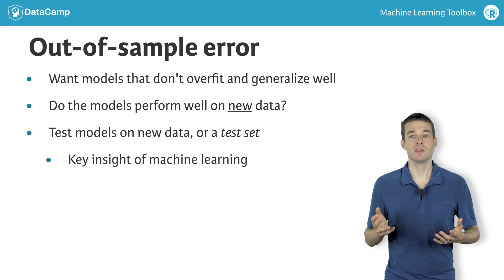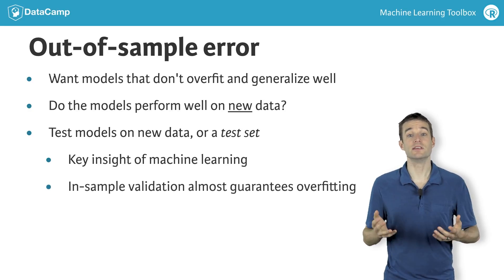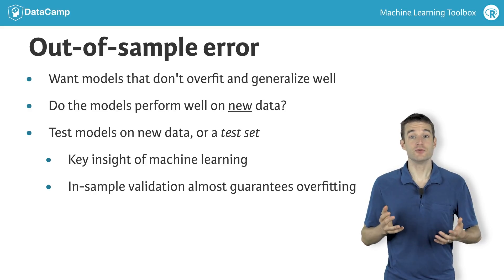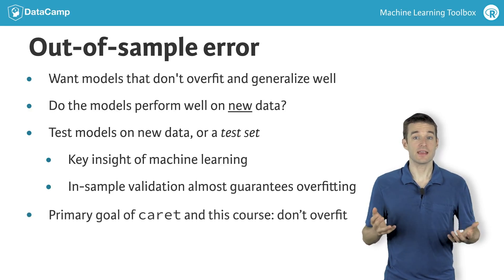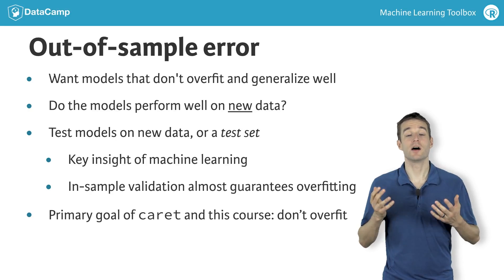Error metrics should be computed on new data because in-sample validation or predicting on your training data essentially guarantees overfitting. Out-of-sample validation helps you choose models that will continue to perform well in the future. This is the primary goal of the Carrot Package in general and this course specifically. Don't overfit. Pick models that perform well on new data.